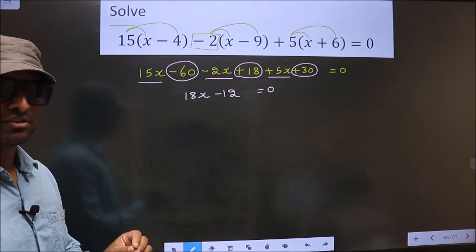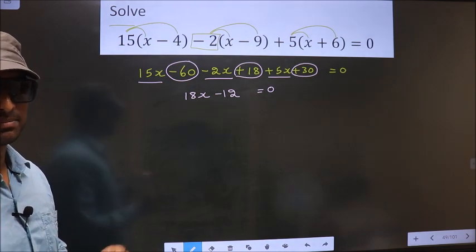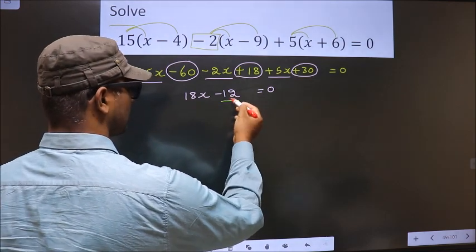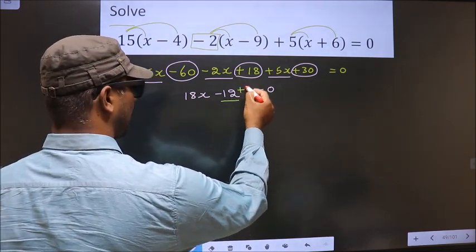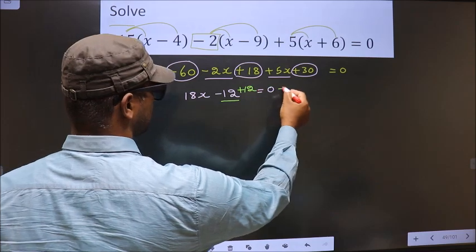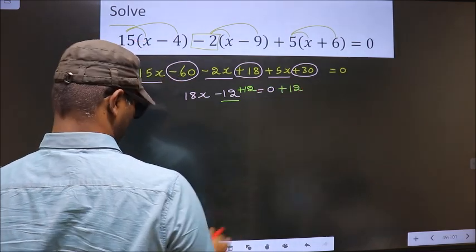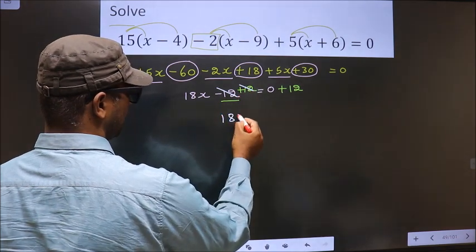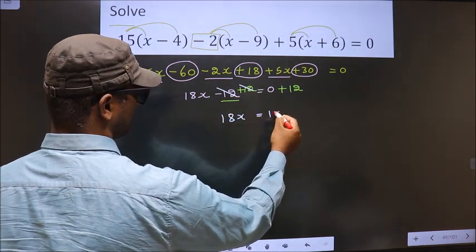Now we should make x the subject. For that first we should remove minus 12, so to remove minus 12 you add 12 on both sides. So now this cancel out. Here you are left with 18x equal to 12.